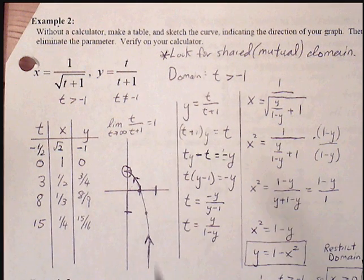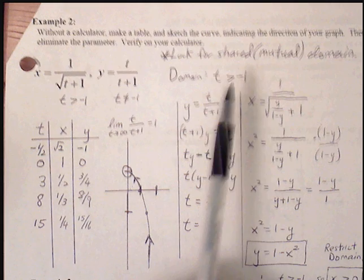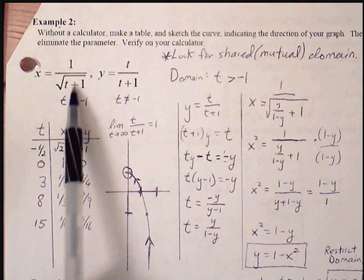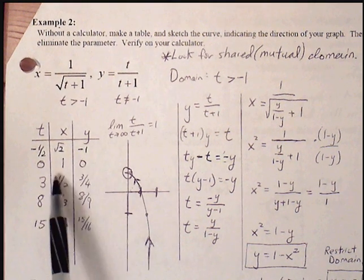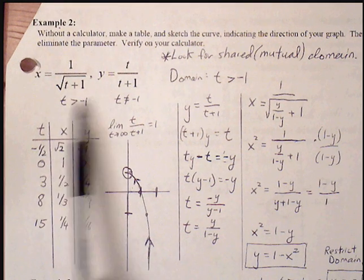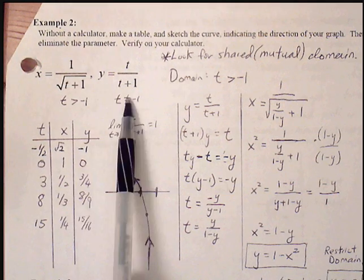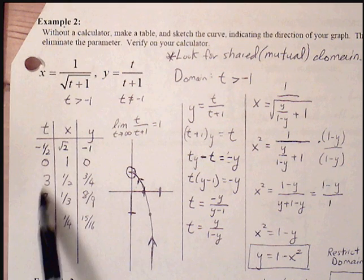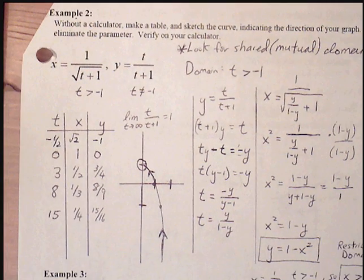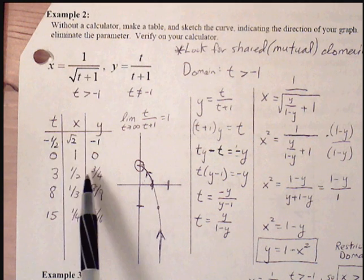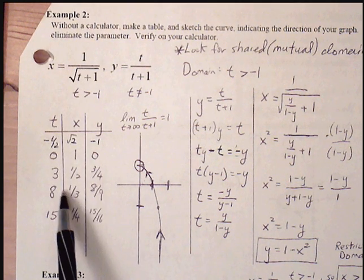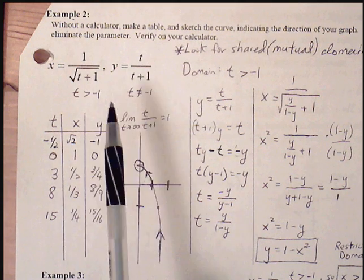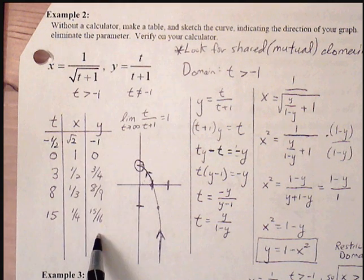We can sketch our graph. Well, we know our domain is greater than negative 1, so we can just go ahead and pick some points that will fit into, that will allow us to graph this easily. So if I plug in 0, I'll get 1 and 0. I have a square root here, so we can pick some values without a calculator that will make things easier for us to graph. So if I plug in 3, I'll get 1 half, and 3 will give me 3 fourths. 8 for x will give me 1 third. 1 over 9, square root of 9 is 3, and then 8 ninths and 15 will produce 1 fourth and 15, 16.